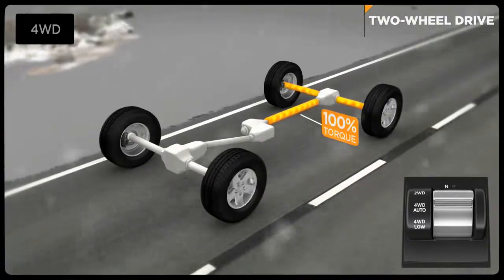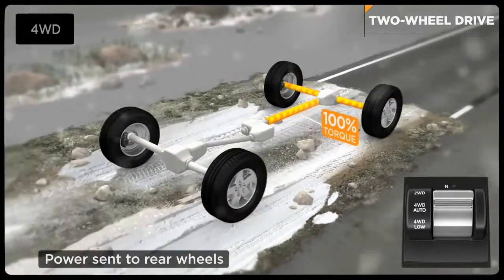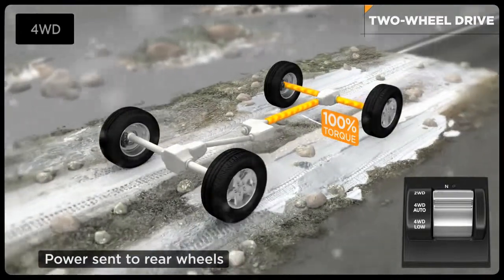In this mode, power is sent to the rear drive wheels only. The transfer case transfers power to the rear axle and wheels which then drives the vehicle.